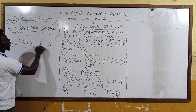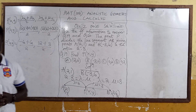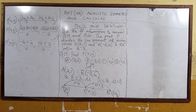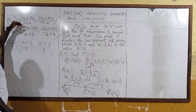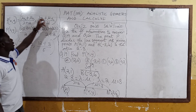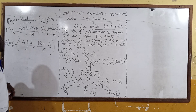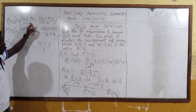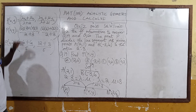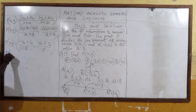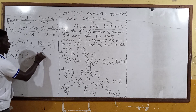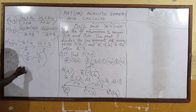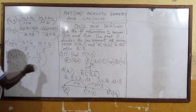Sorry for the mistake — I was doing the midpoint formula. The correct formula is: P(x, y) equals (lambda x2 plus mu x1) divided by (lambda plus mu), and (lambda y2 plus mu y1) divided by (lambda plus mu). So we have x equals 0 divided by 5, and y equals (2 times 6 plus 3 times 1) divided by 5 — that gives 12 plus 3 divided by 5, which is 15 divided by 5. So point P(x, y) equals (0, 3).